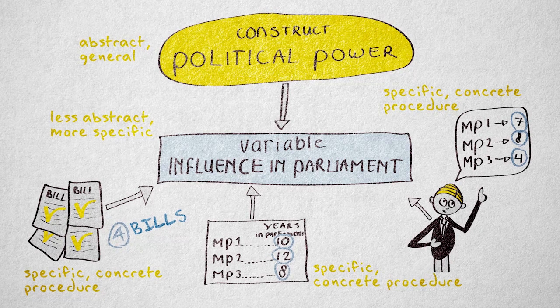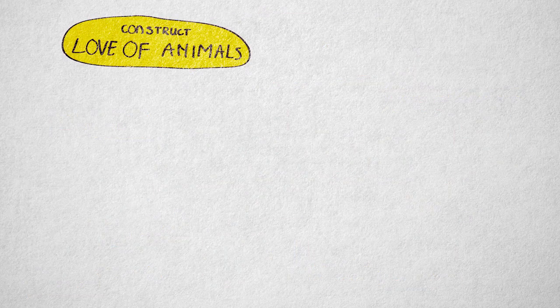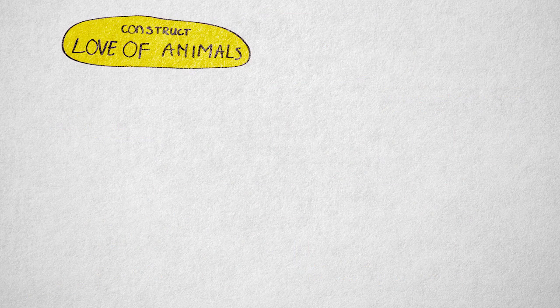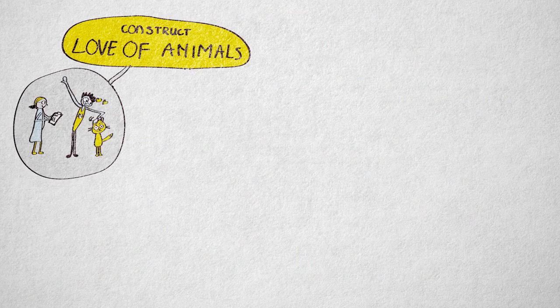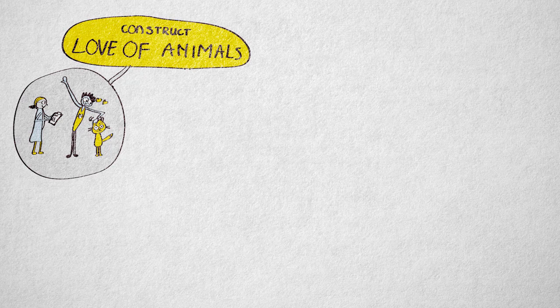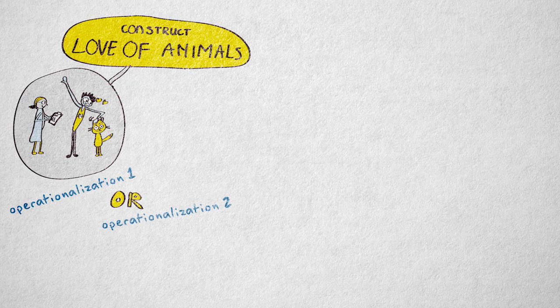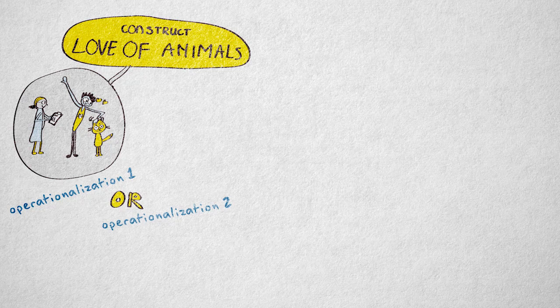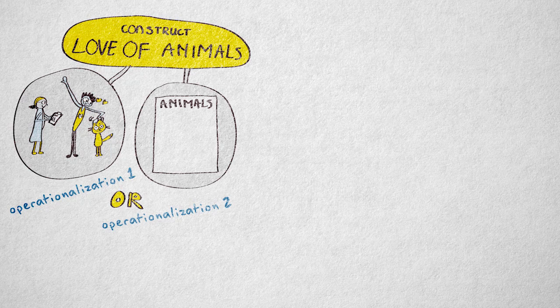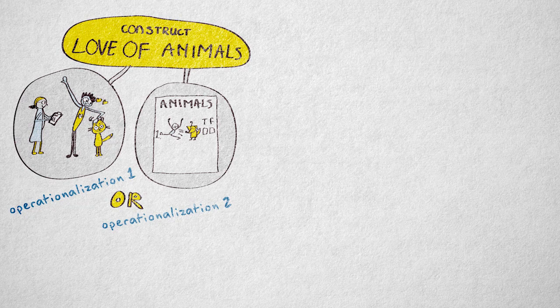Suppose I want to operationalize the construct love of animals. I can observe a person interacting with a cat and count how often the person pets or strokes the cat. I could also decide on a different operationalization or operational definition by creating a questionnaire with statements like, I usually avoid other people's pets and I love animals.